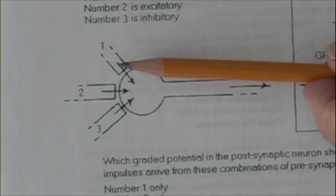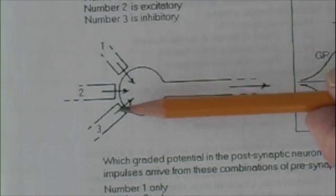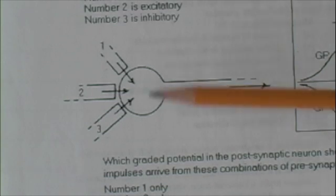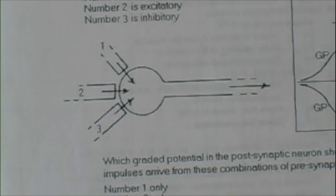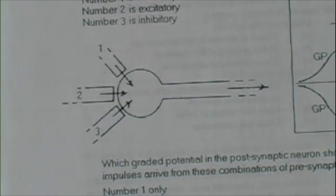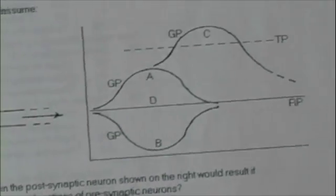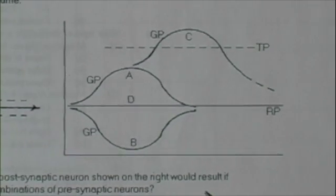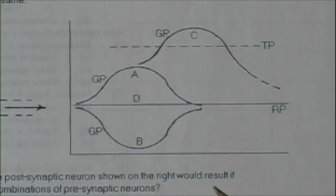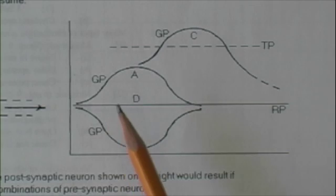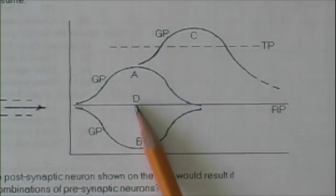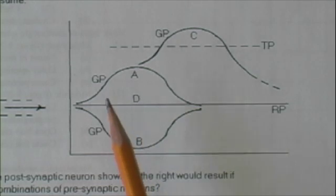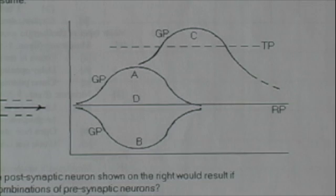Let's further assume that the magnitude, that is, the height of the graded potential, either up or down, is the same. If that's the case, we can answer some questions. Let's look at this diagram. What if a nerve impulse was arriving along presynaptic neuron number one only? Remember, number one is excitatory, and this is the height of the graded potential. Would that lead to a nerve impulse in the postsynaptic neuron? Well, no, because here is where threshold is.